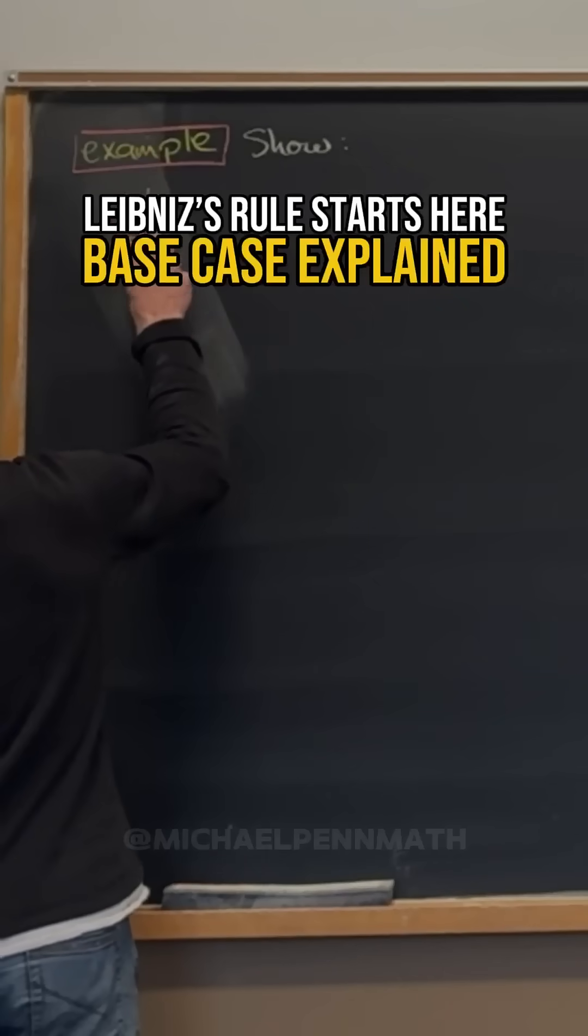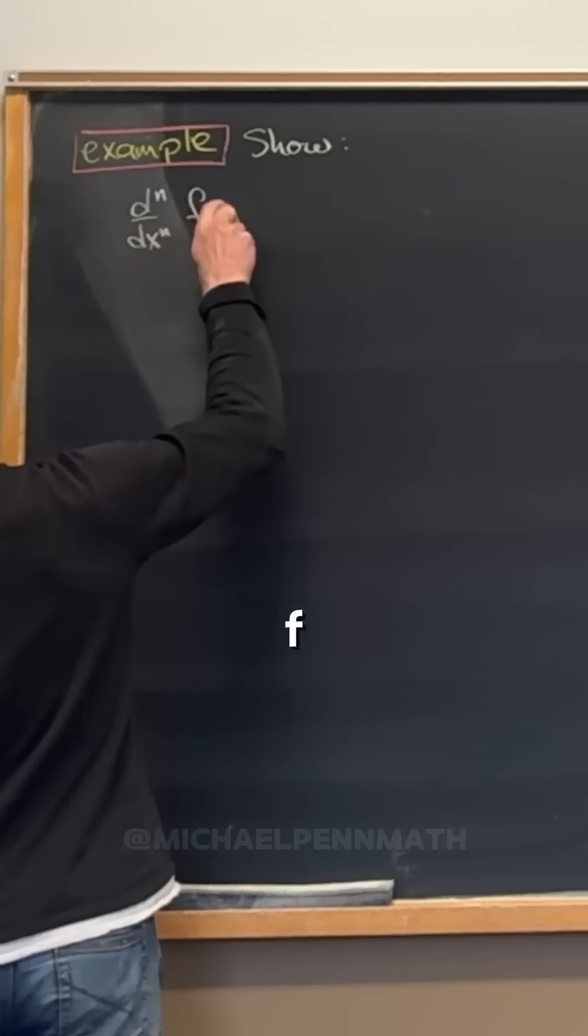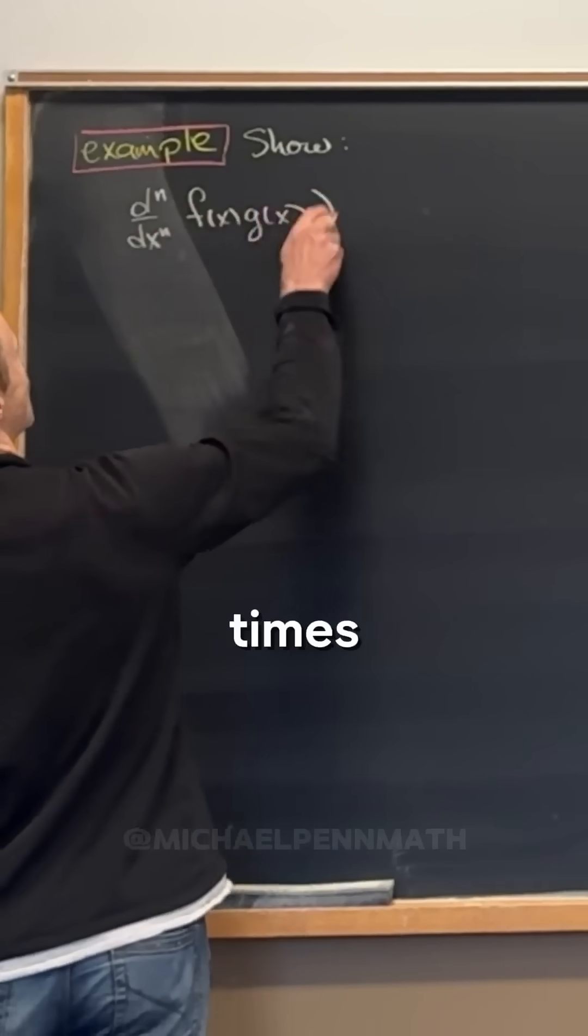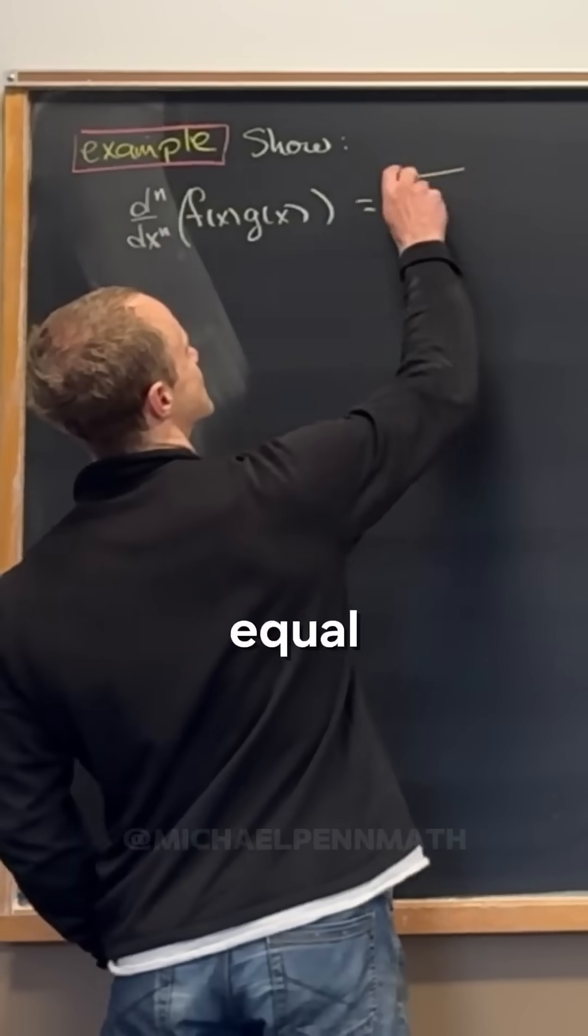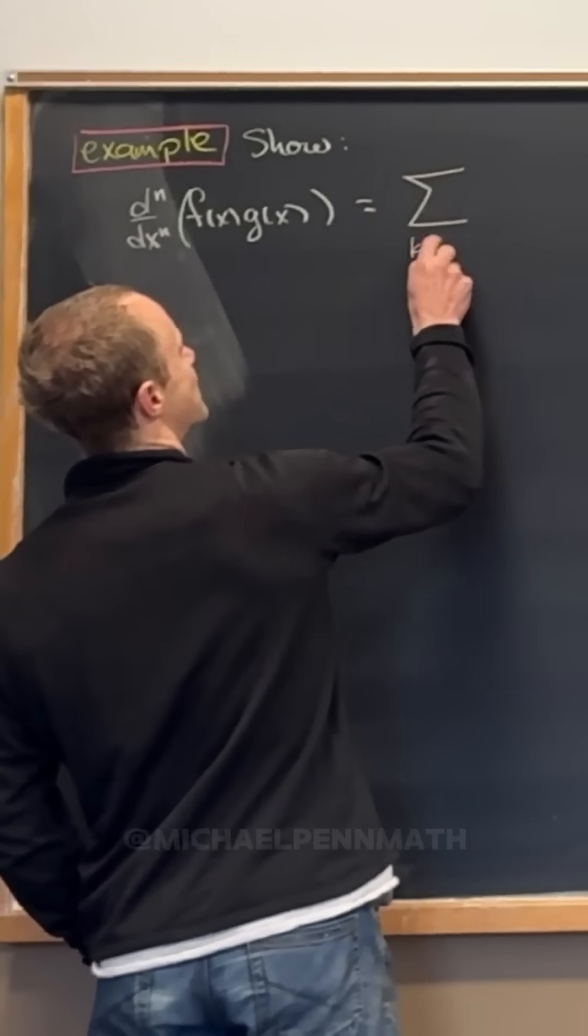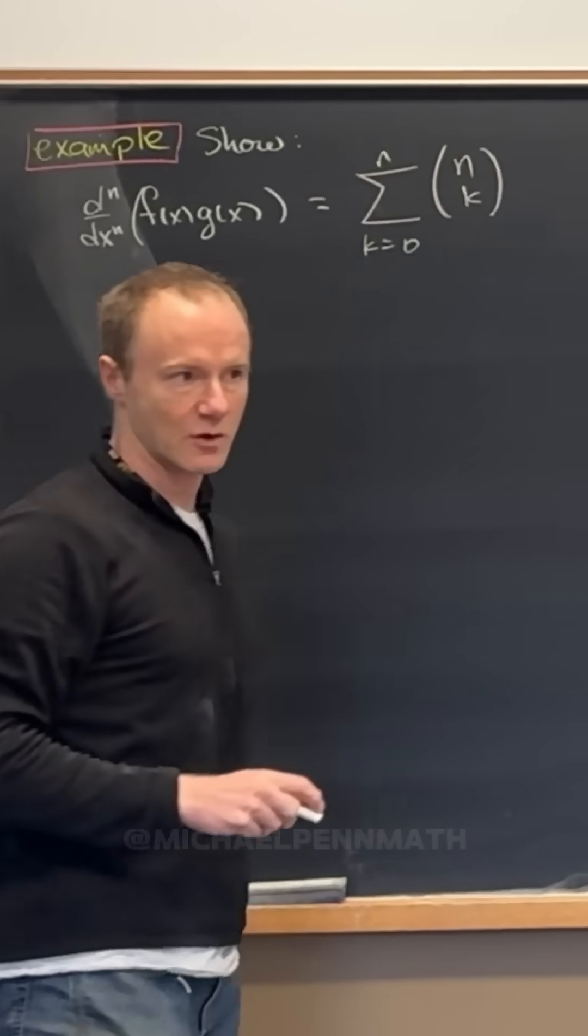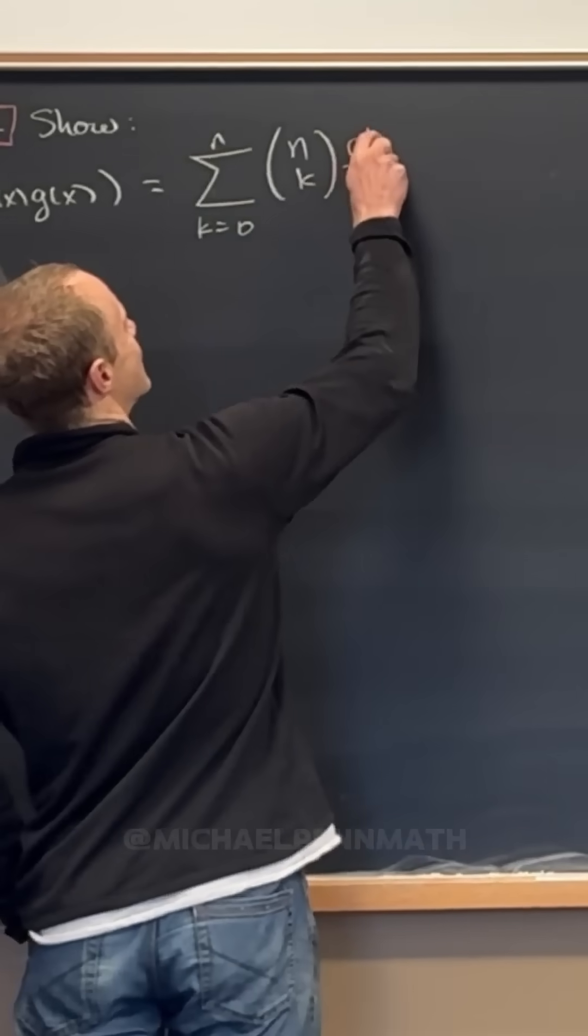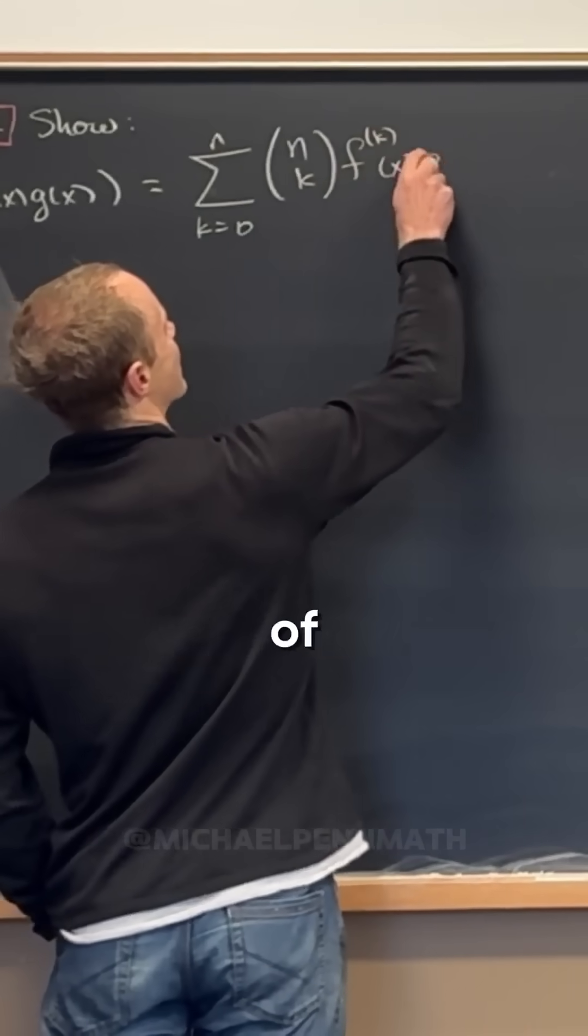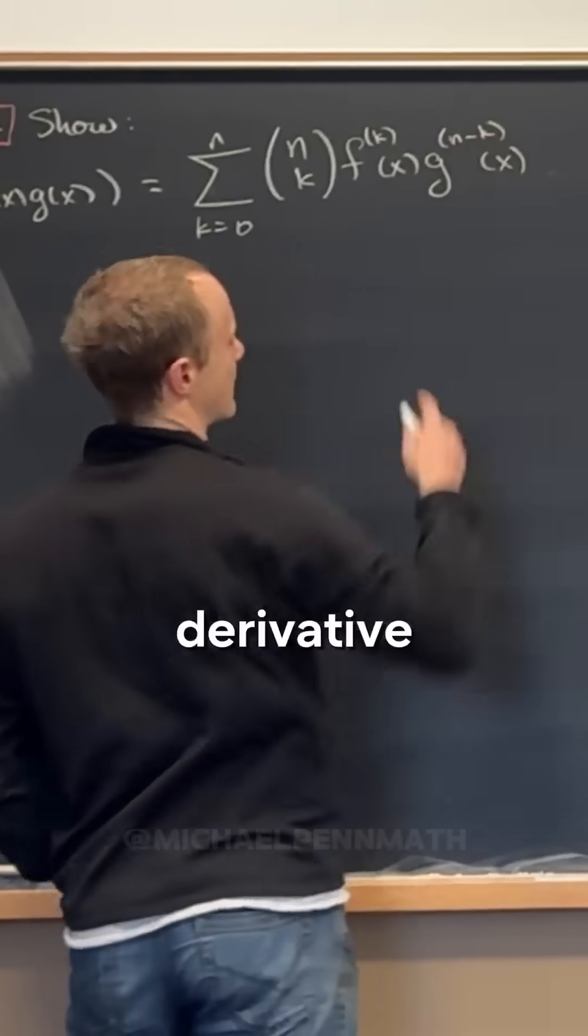Let's show the nth derivative with respect to x of a product f(x) times g(x) is equal to the following. This is going to be equal to the sum as k goes from 0 to n of the binomial coefficient n choose k, and then the kth derivative of f and then the (n minus k)th derivative of g.